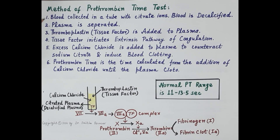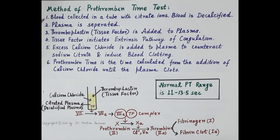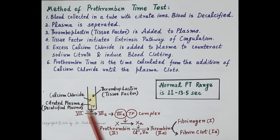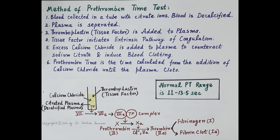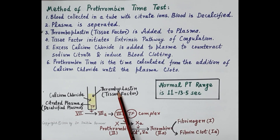Sodium citrate precipitates the calcium ions present in the blood, removing them so the blood becomes decalcified. Plasma is then separated from this decalcified blood — this is the citrated plasma shown in yellow. Thromboplastin, which is a source of tissue factor, is then added to the decalcified plasma.